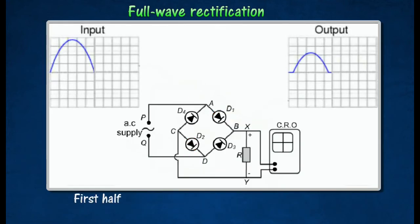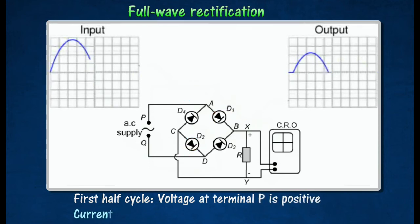During the first half cycle, the voltage at terminal P is positive. Current flows through diodes D1 and D2 following the path P, A, B, X, Y, C, D, Q.